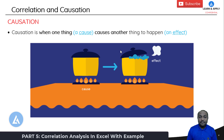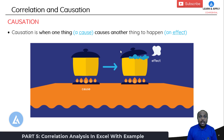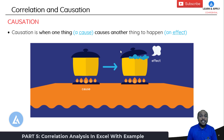Now there is a difference between correlation and causation that we have understood with the help of practical examples. The important learning is: whenever we see that there is a correlation between variables, we need to involve subject matter expertise to understand whether it is a correlation or causation.